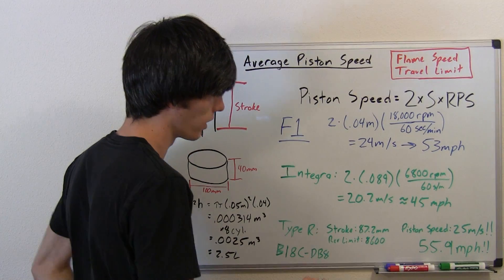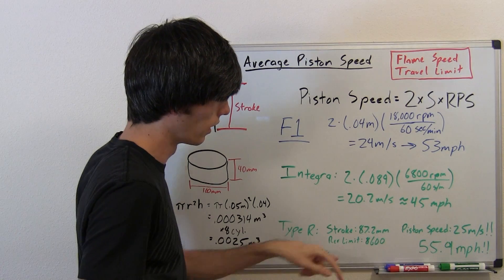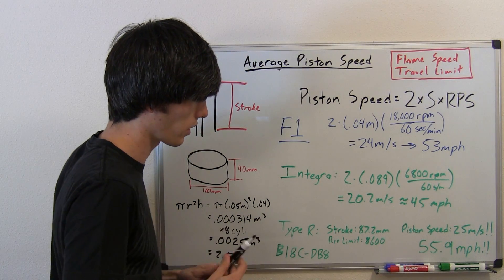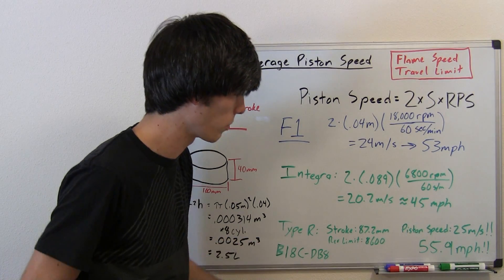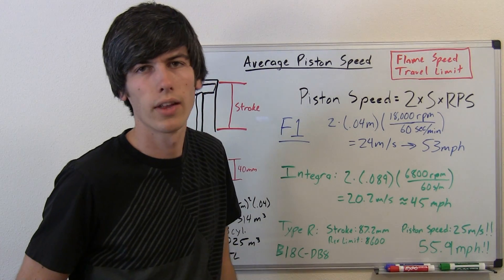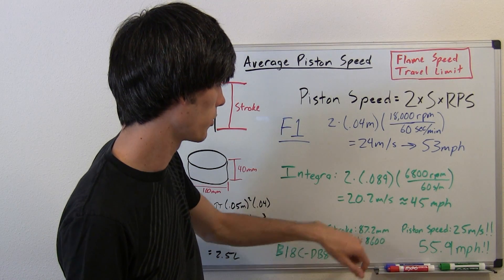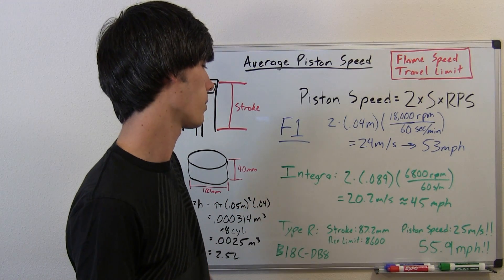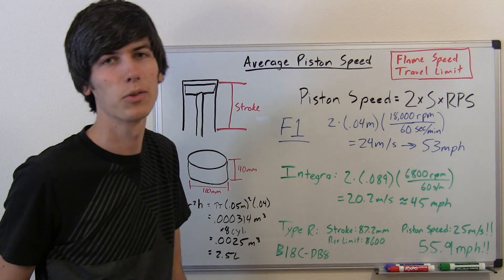The Type R B18C engine has a stroke of 87.2 millimeters. That, I'm pretty sure on. The rev limit varies with the different engines thrown in the Type R. Some say 8,200. I've seen 8,700. I saw on Wikipedia 8,600, so that's the number I'm going to use. When you multiply across, 2 times 0.0872 times 8,600 divided by 60, you get a piston speed of 25 meters per second.